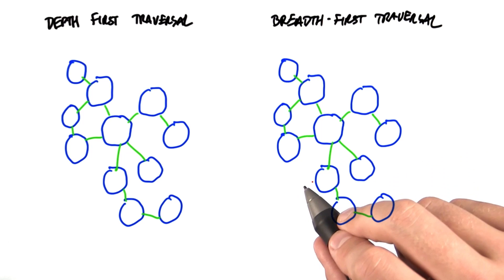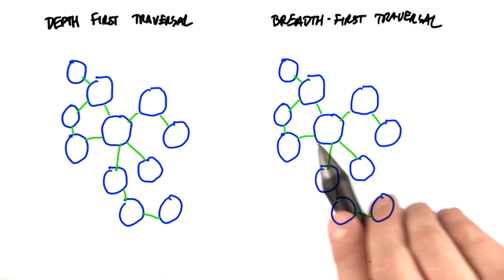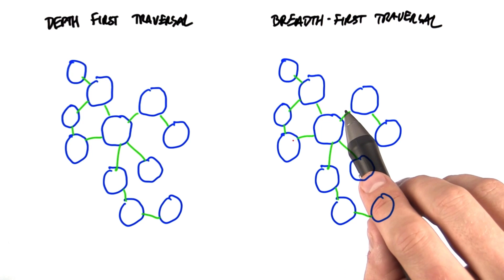Now there's two approaches to traversing a graph called depth-first traversal and breadth-first traversal. And so this picture is going to help us show the differences.